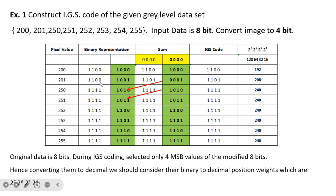For the next pixel, the number is 1100 1001. We add the previous 4 LSBs — 1001 — to the current number and get the new modified value. We then extract the 4 MSBs, and those become the IGS code. The process is repeated for each subsequent pixel.